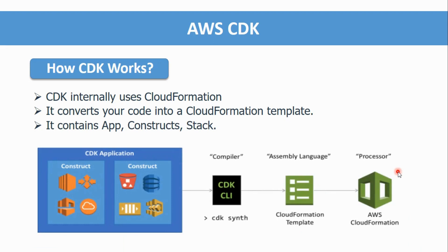Looking at the structure of a CDK project, it contains an app, constructs, and stacks. Inside an application there are multiple constructs. A construct is basically a group of AWS services — for example EC2, Load Balancer, Route 53, Secrets Manager, S3, or RDS.